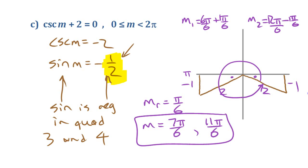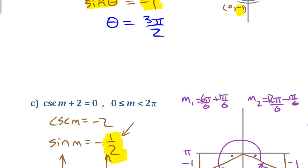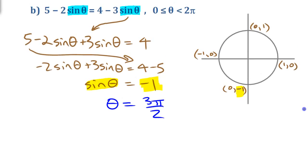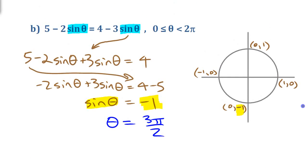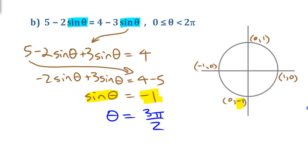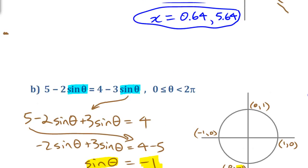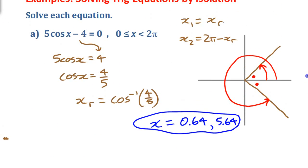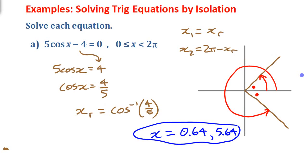That's three different examples of solving first-degree trig equations. One using the calculator for an approximate answer, one using a unit circle approach, and one using exact values from the special triangles. That's it.